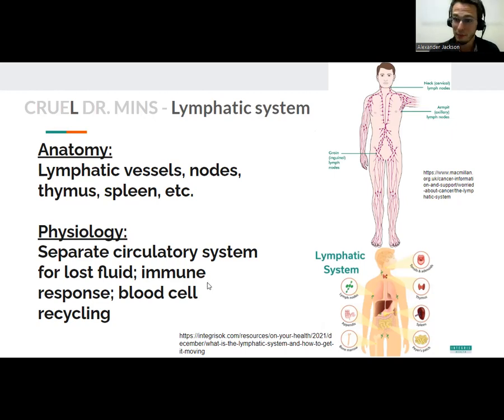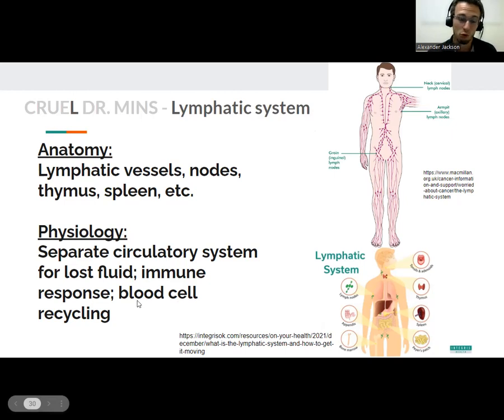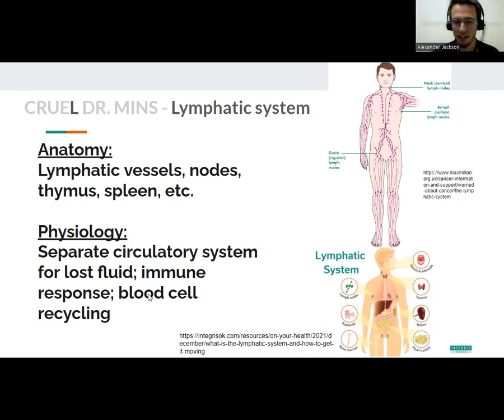The spleen is also part of the lymphatic system — this is where your blood cells get recycled. They get broken down so we can make better blood cells, because they get worn out after a while.